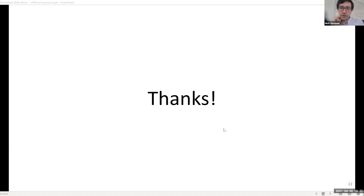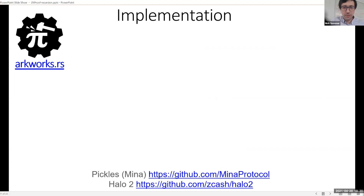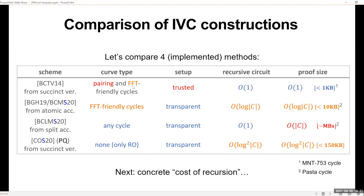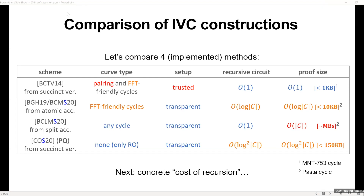The benchmarks do use cycles of elliptic curves. If they did not use cycles, the benchmarks would be absolutely horrendous. As for which cycle: BCDB14 originally used the MNT4-MNT6 cycle on 320-bit curves, but now you have to use 768-bit or 753-bit MNT curves, which are much slower. For evaluating BCMS20 and BCLMS20, we used the Pasta cycle.